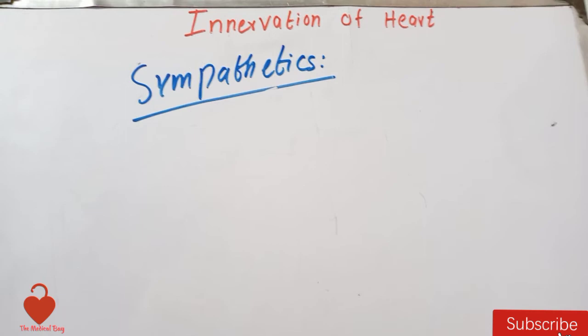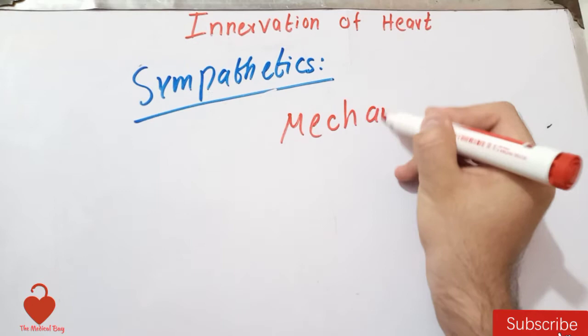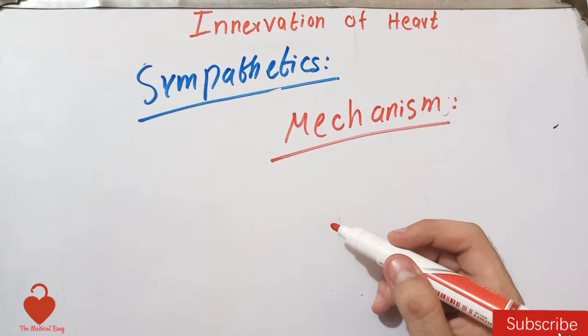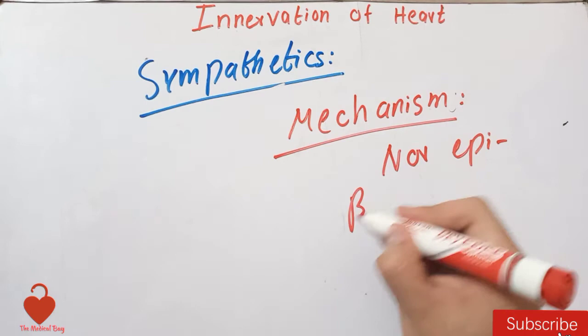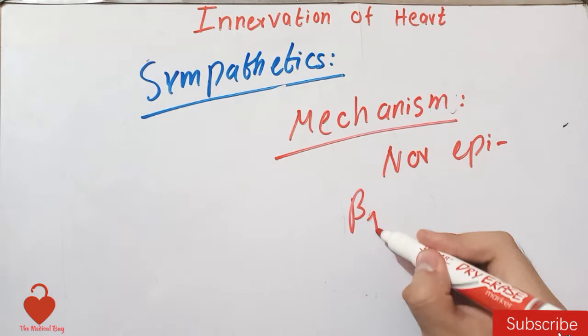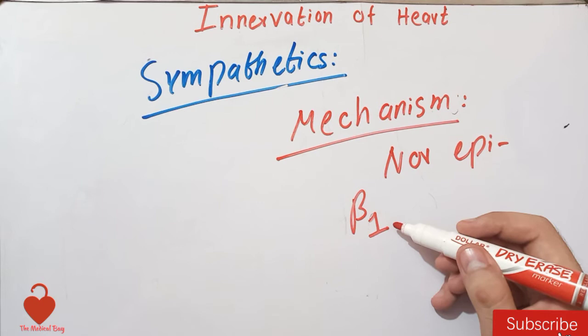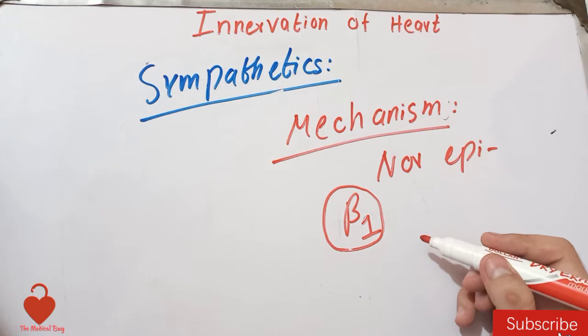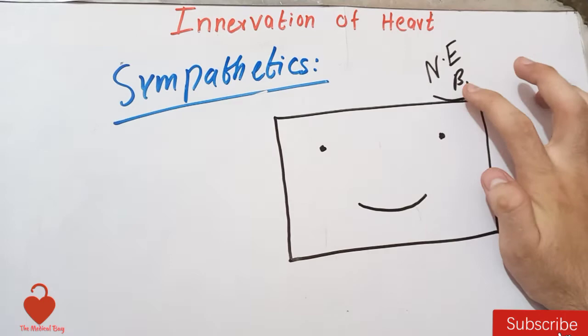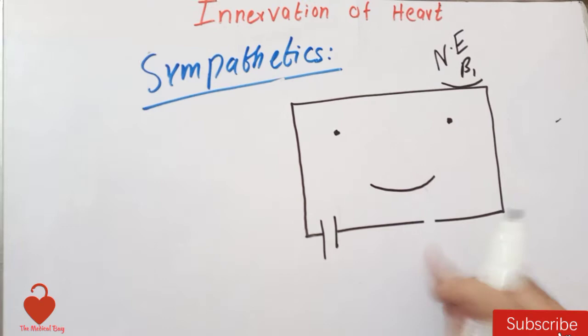Now let's talk about the mechanism of action of the sympathetics on the heart. The neurotransmitter released at the sympathetic nerve endings of the heart is norepinephrine, and it acts on the beta-1 receptors present on the heart. Do not confuse beta-1 and beta-2 receptors — beta-1 receptors are present on the heart musculature and on the conducting system.